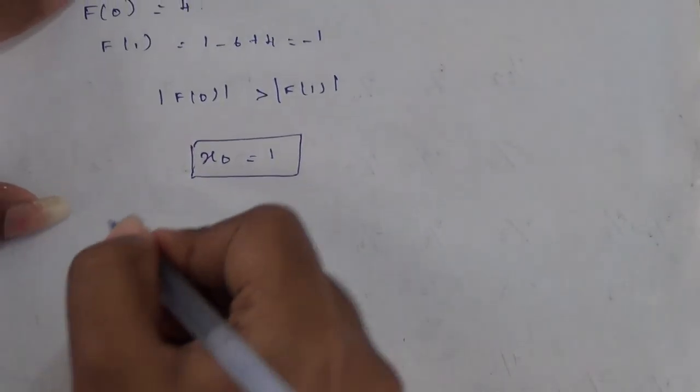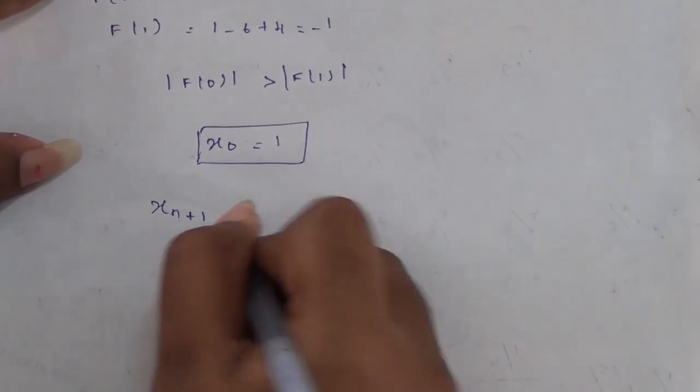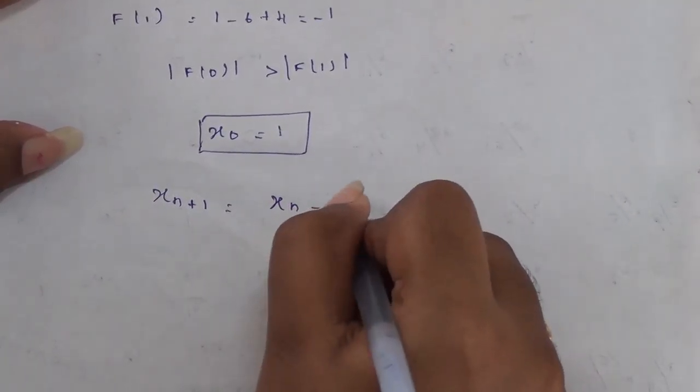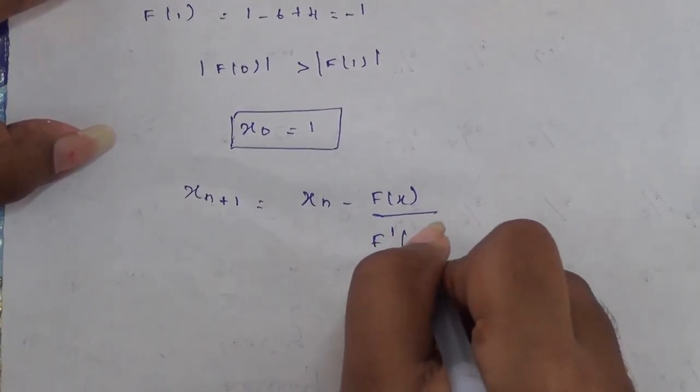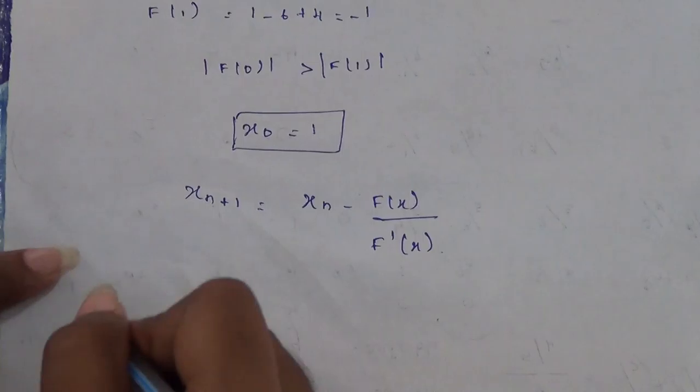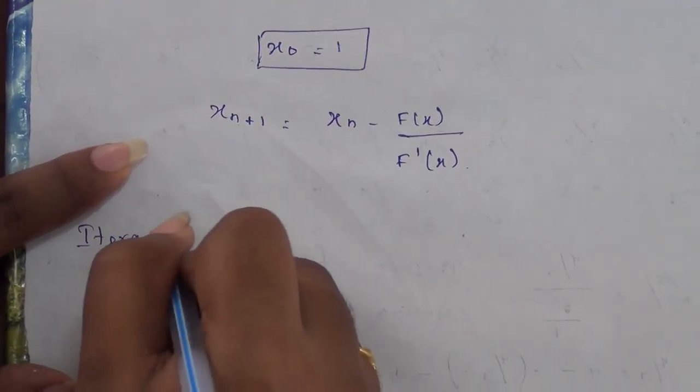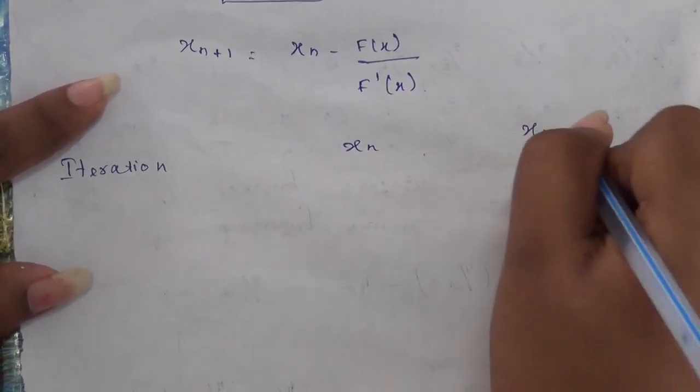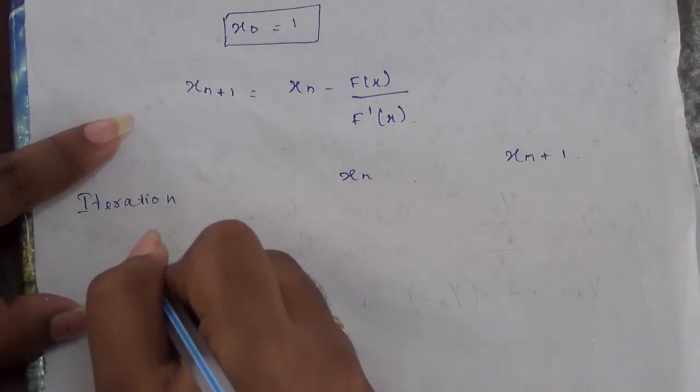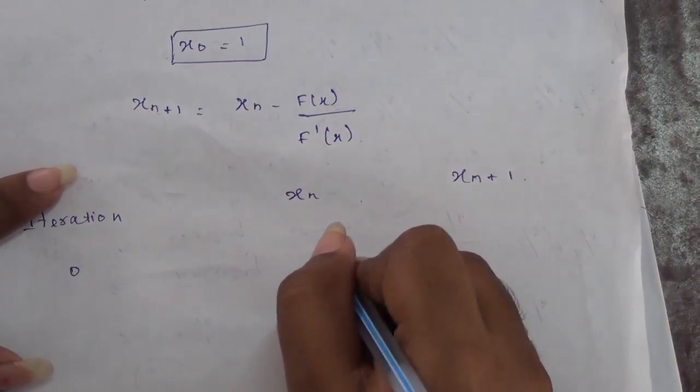The formula for calculating Newton-Raphson method is x_{n+1} = x_n - f(x)/f'(x). Now we have to form a table with 3 columns which has iteration, x_n value, and x_{n+1} value. We start with iteration 0, and when the value of iteration is 0, the value of x_n is 1.